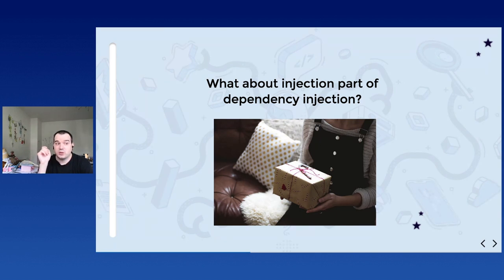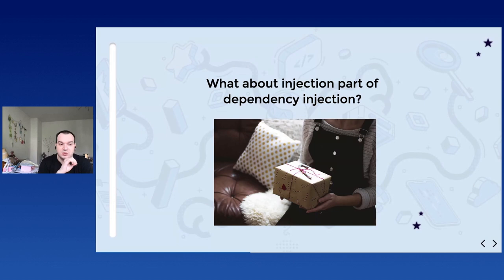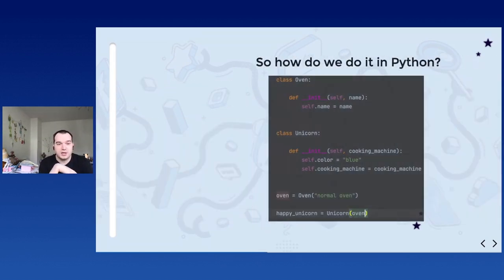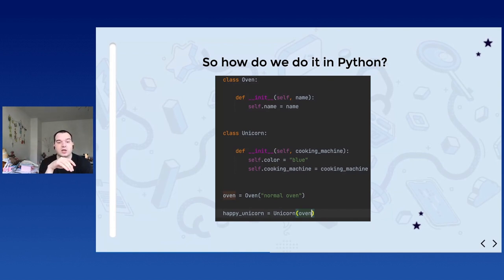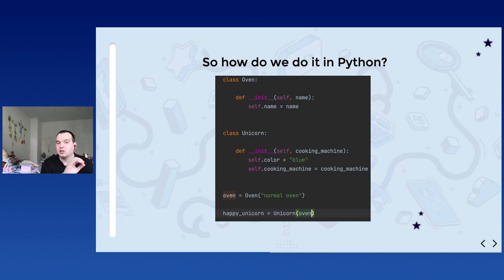It can also help you a lot especially when you want a singleton for example. Now in Python we have many ways of doing this. The simplest way is to just extend the constructor - say, instead of initializing the cooking machine to be an oven in the constructor, we're just going to pass it. And that's it - a few lines of code, as everything beautiful in Python.